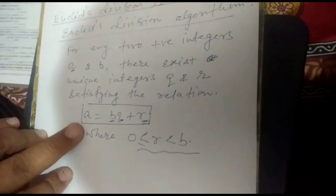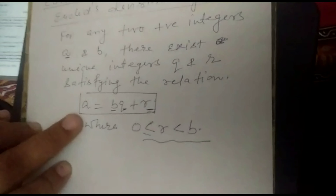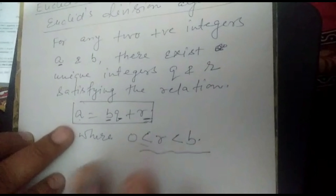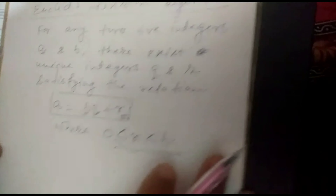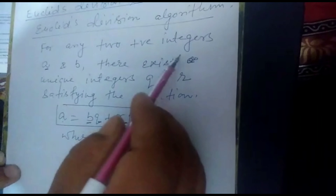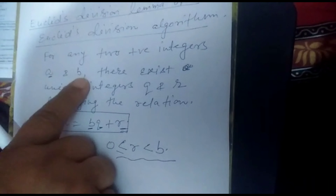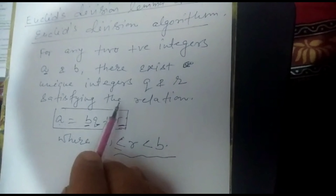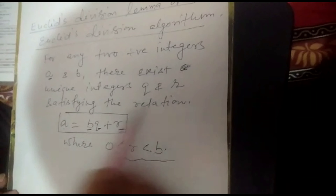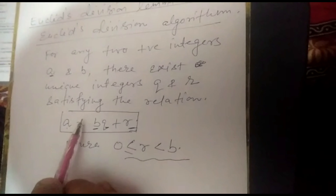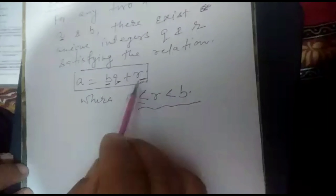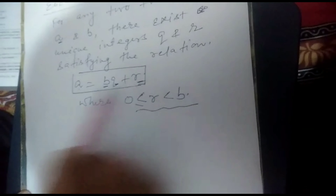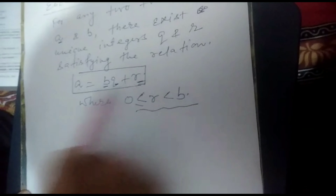For verification of any division, at last we check whether our division is right or wrong. We prove it by multiplying divisor by quotient and then adding the remainder. If it becomes the dividend, then the division is right. So Euclid's Division Lemma states that for any two positive integers A and B, there exist unique integers Q and R satisfying A = BQ + R.